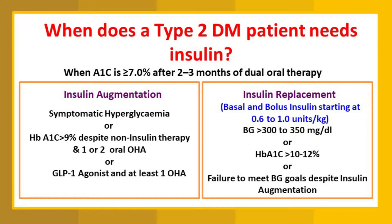Insulin replacement comes into picture when blood glucose is more than 300–350 mg/dL, HbA1c is more than 10–12%, and insulin augmentation has completely failed. Then we go for insulin replacement. In this video, however, we are only going to talk about insulin augmentation; insulin replacement will be discussed later.